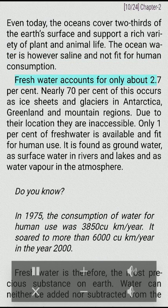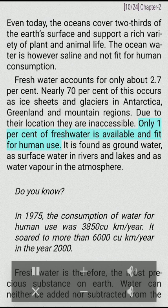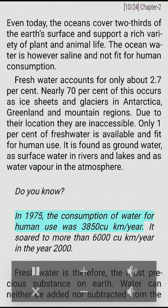Fresh water accounts for only about 2.7%. Nearly 70% of this occurs as ice sheets and glaciers in Antarctica, Greenland and mountain regions. Due to their location they are inaccessible. Only 1% of fresh water is available and fit for human use. It is found as groundwater, as surface water in rivers and lakes and as water vapor in the atmosphere. In 1975, the consumption of water for human use was 3,850 cubic km per year. It soared to more than 6,000 cubic km per year in the year 2000.